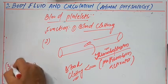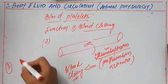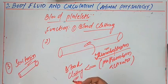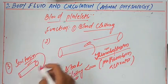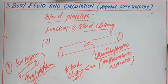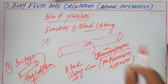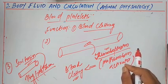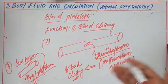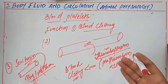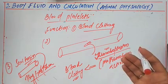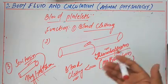The third function of blood platelets is that they release a vasoconstrictor called serotonin, which helps in the constriction of blood vessels. This serotonin is derived from the amino acid tryptophan. So to summarize the three functions: blood platelets help in blood clotting, they release thromboplastin which is a prothrombin activator, and they secrete serotonin which is a vasoconstrictor derived from tryptophan.